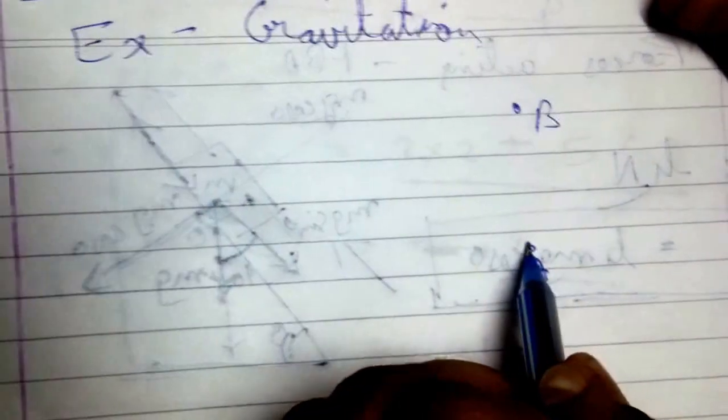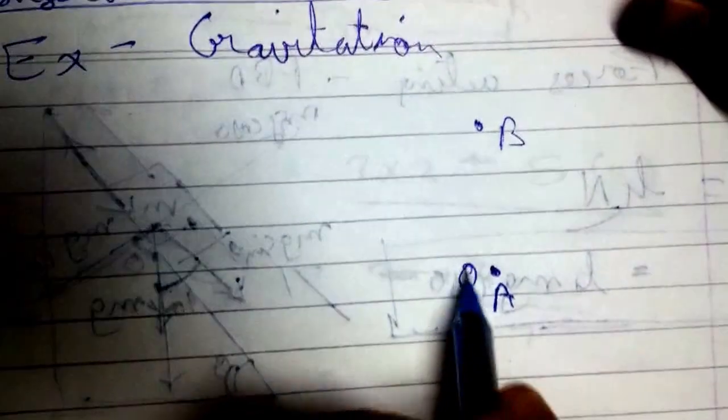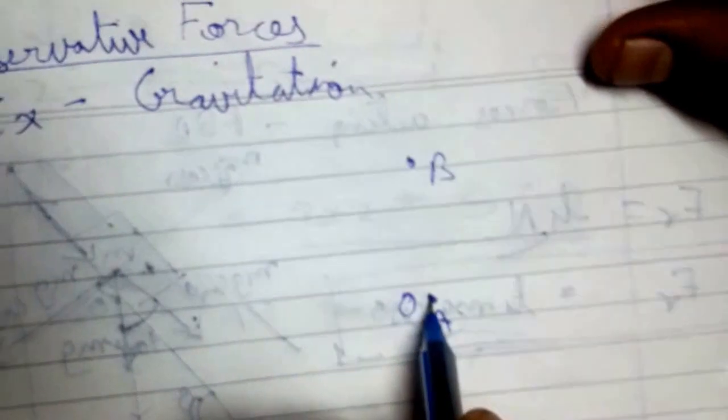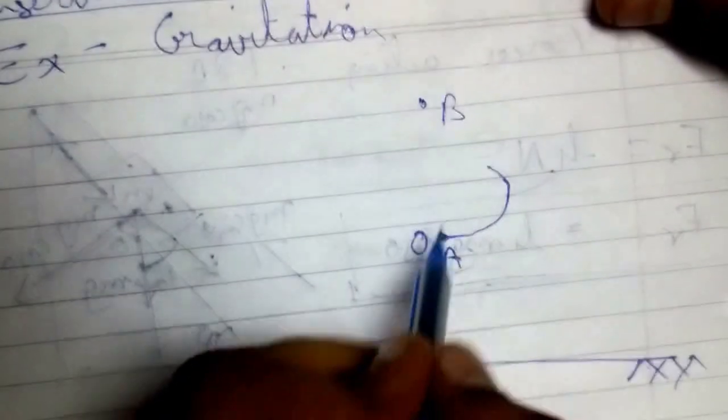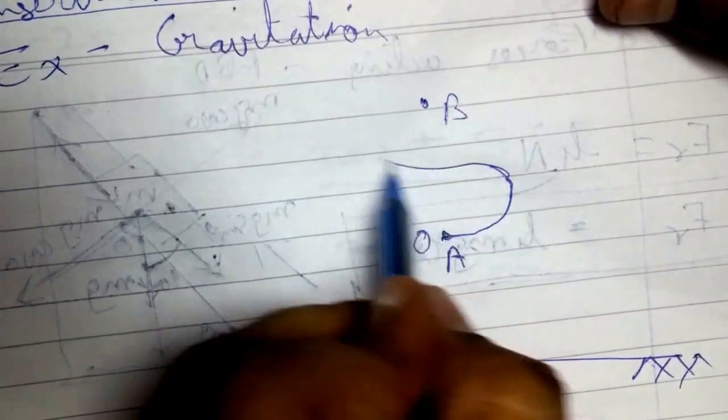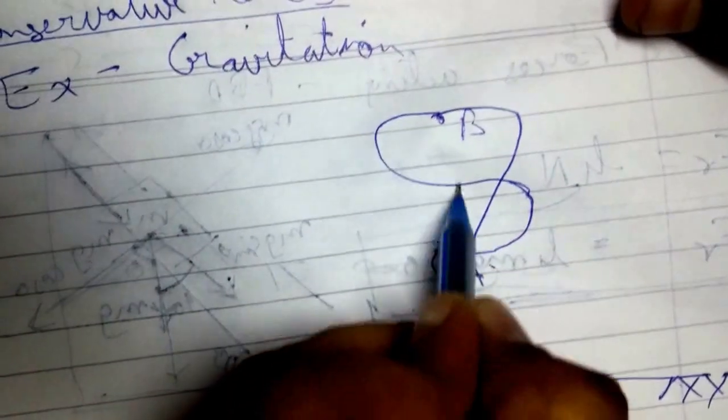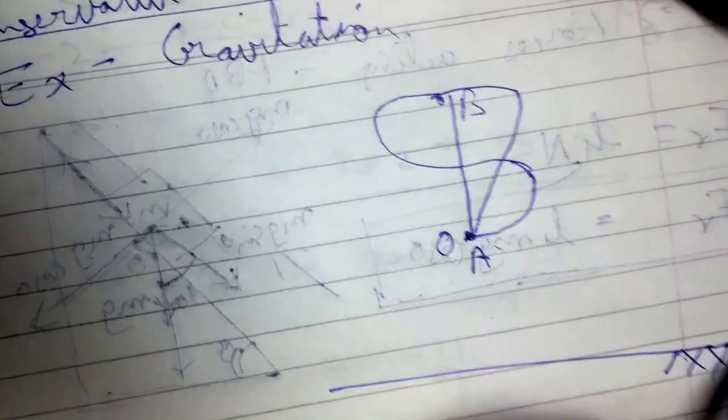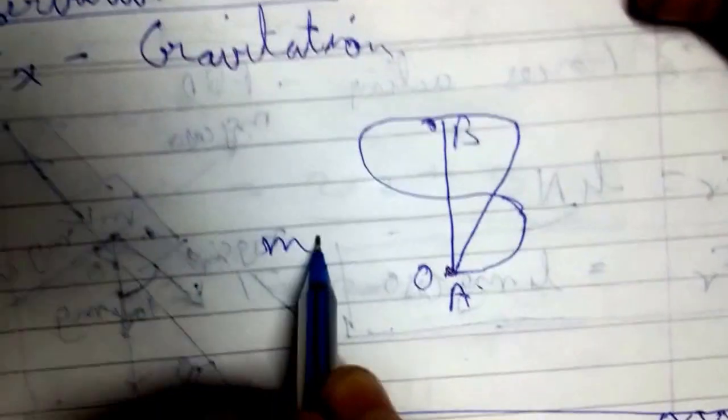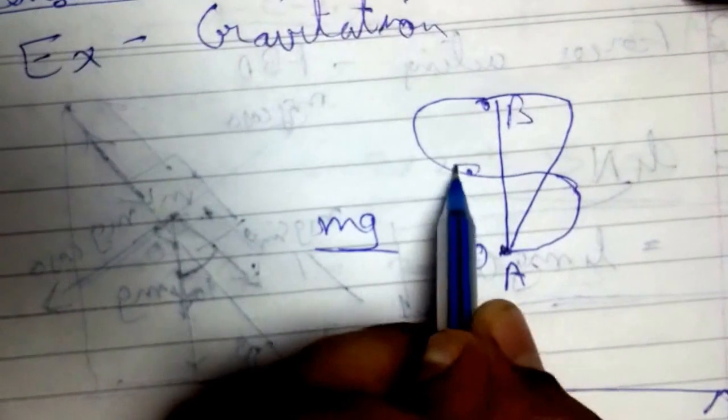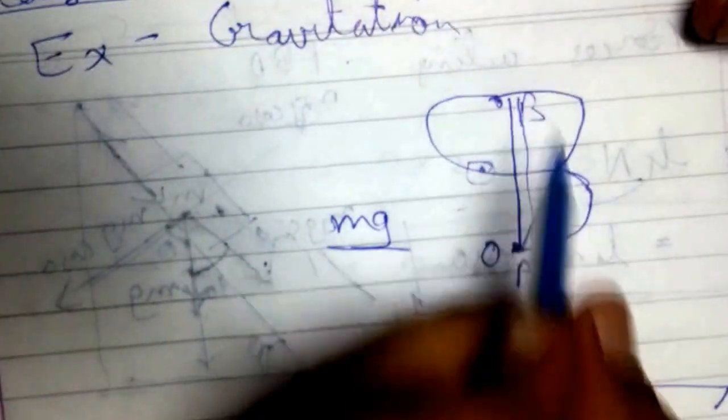is independent of path. So if I am having a ball over here and suppose my ground level is over here, if I am moving the ball from position A to position B through this path or through this path or directly in a straight line, the work done in moving the body against the gravitational force mg, that is the weight of the ball, would be same in all three cases.